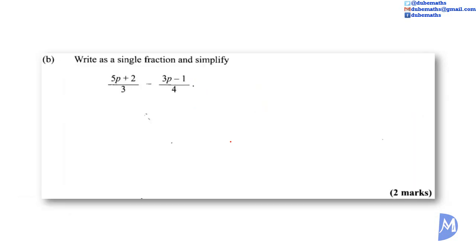Write as a single fraction and simplify. So we're going to express both as fractions over the LCM. The LCM of 3 and 4 is 12. To get the fraction over 12, we multiply the denominator by 4, so we'll multiply the numerator by 4 as well to get 4 multiplied by 5b plus 2. Subtract. Write the second fraction over the LCM. We multiply 4 by 3 to get 12, so we multiply the numerator by 3 as well to keep the fraction equivalent. We have both fractions over the same denominator so we can add the numerator.